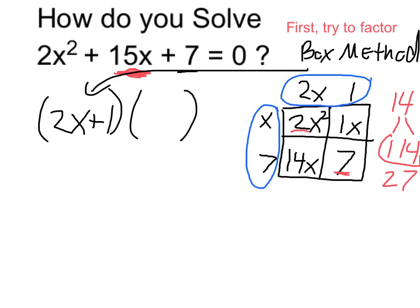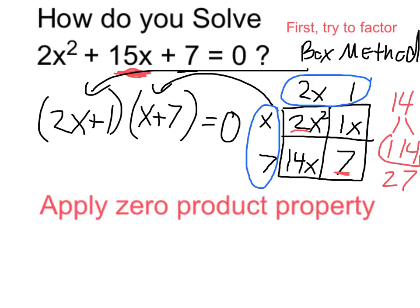And that's going to be times, coming from here, x plus 7, and all that is equal to 0 still, because the whole thing is equal to 0. Now, I'm going to apply my zero product property. The zero product property is the one that tells me if the whole thing is equal to 0, then either the first factor is 0, or the second factor here is equal to 0.